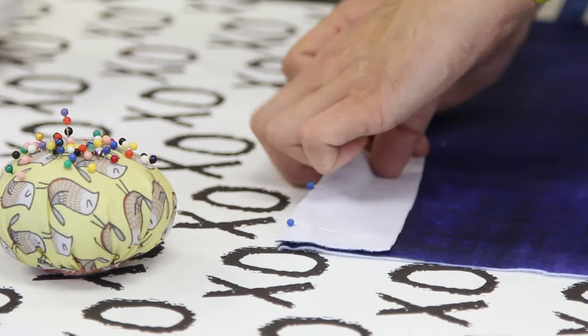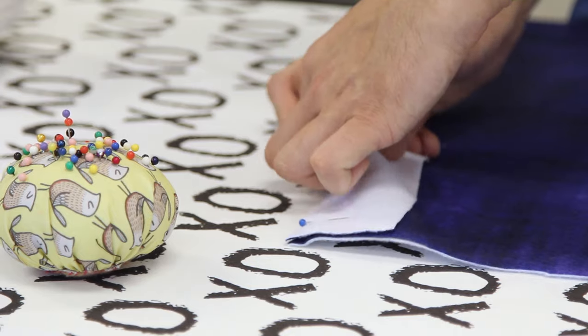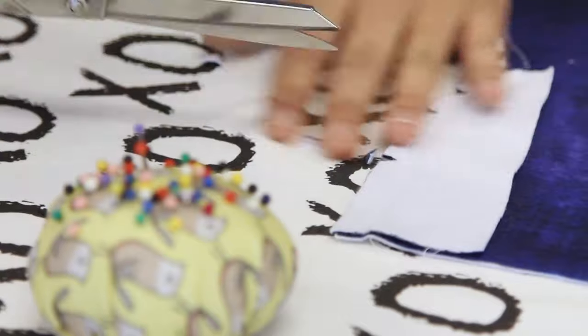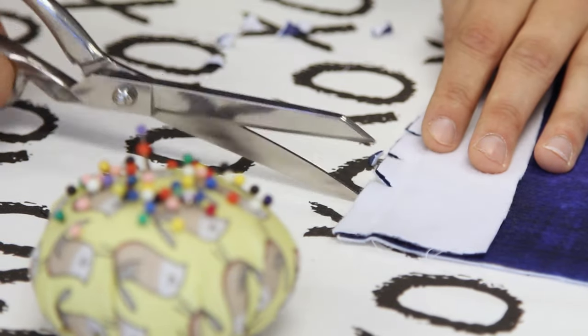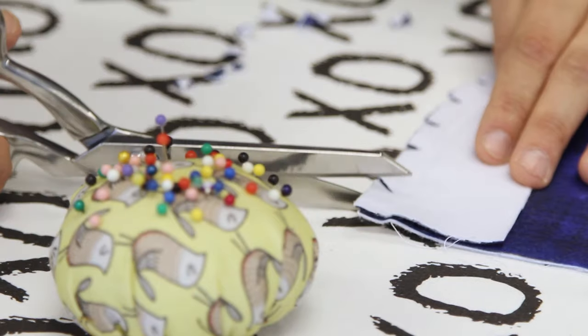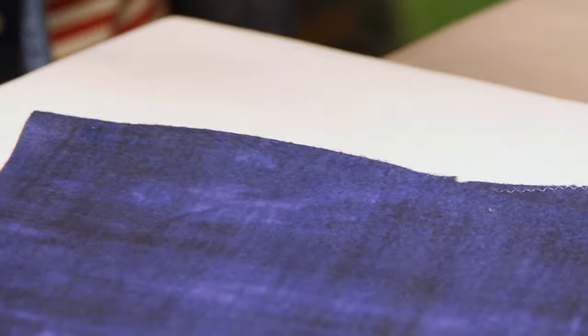Pin and stitch the fly facing on the right pant leg using a fourth inch seam allowance. Clip along the curve in the seam allowance of the fly facing up to the stitching line. This allows the seam to lie flat. Turn the fly right side out and press.